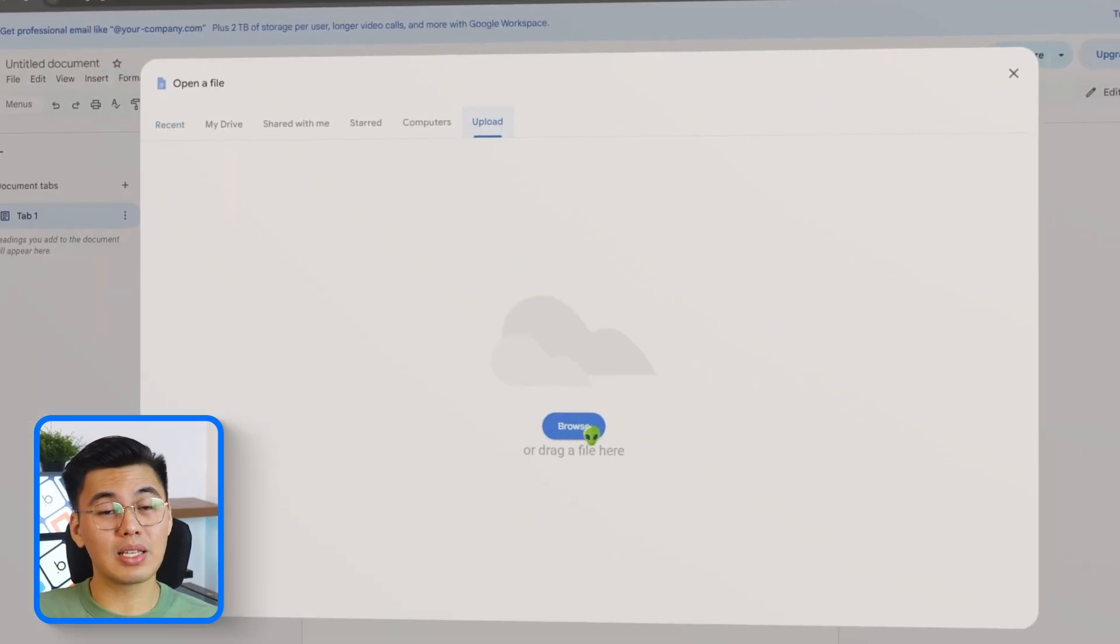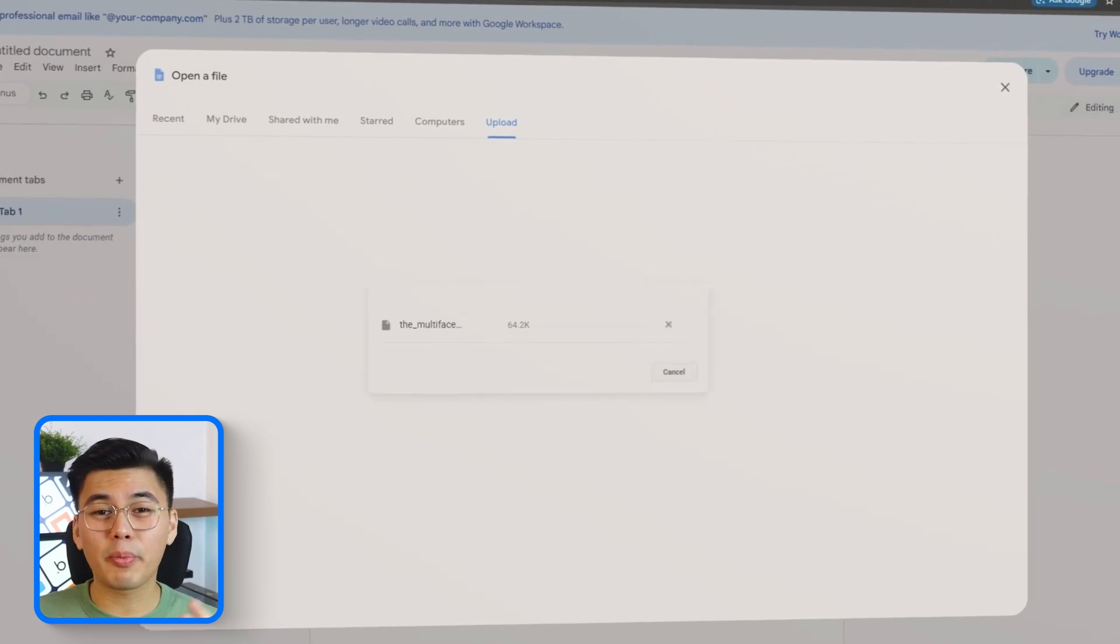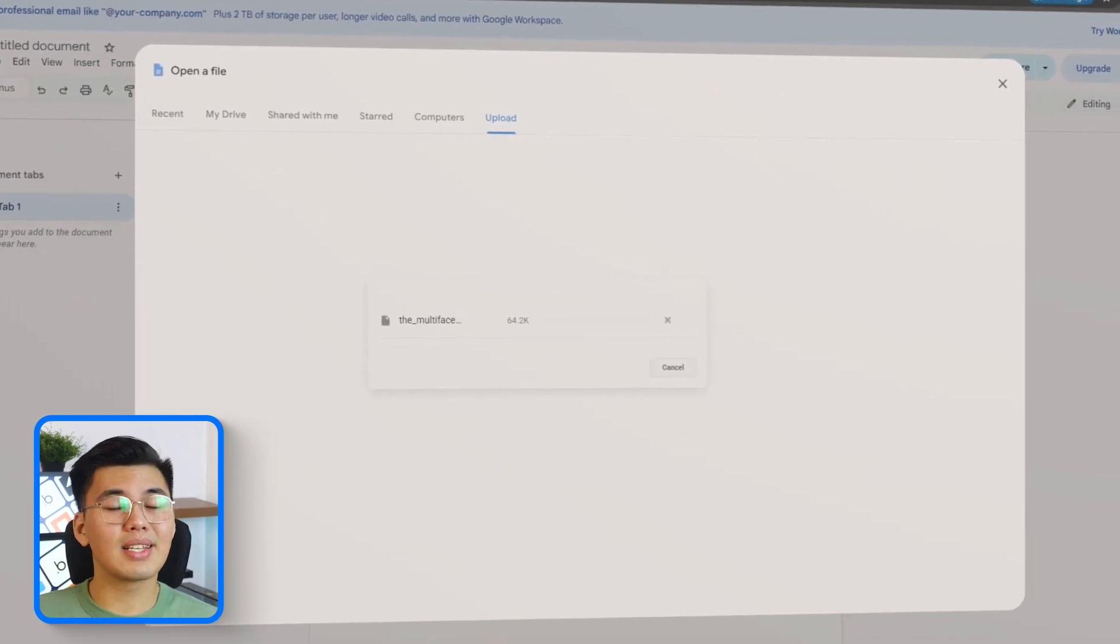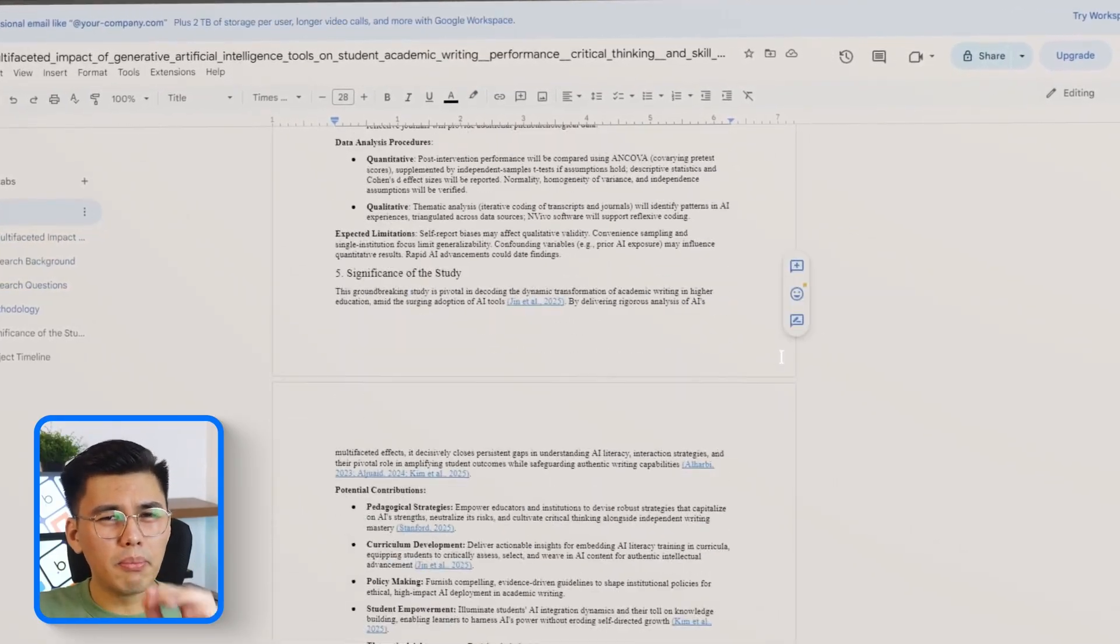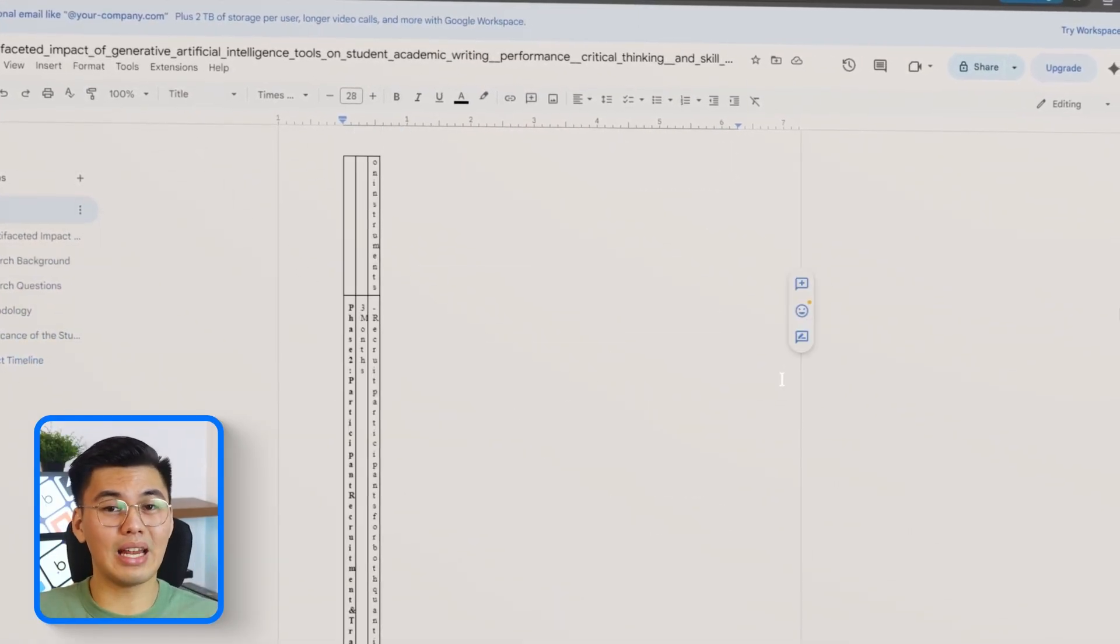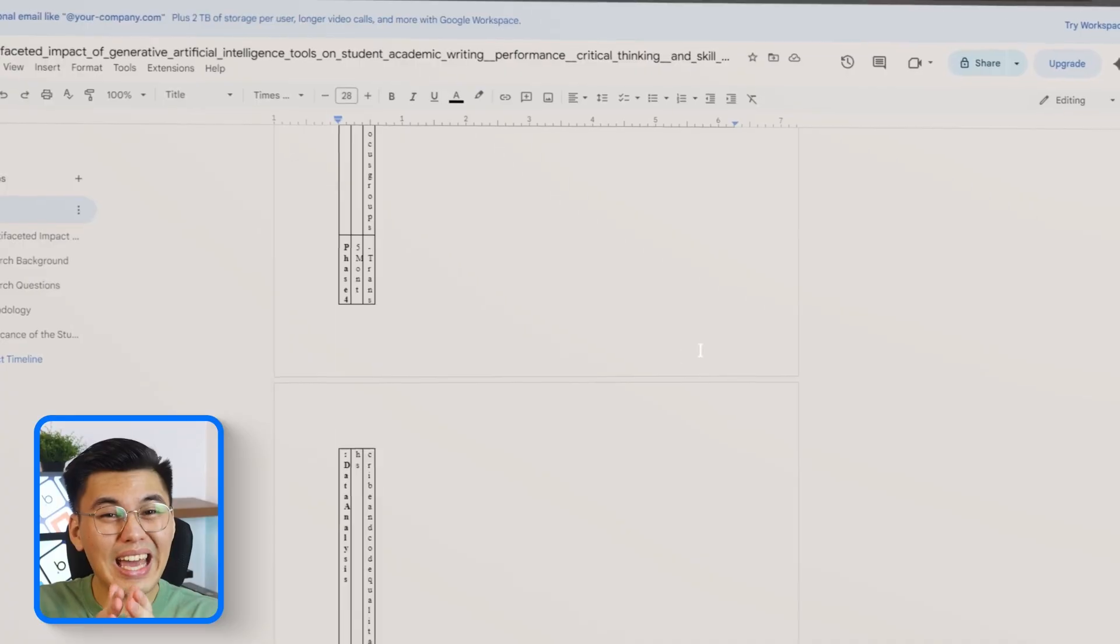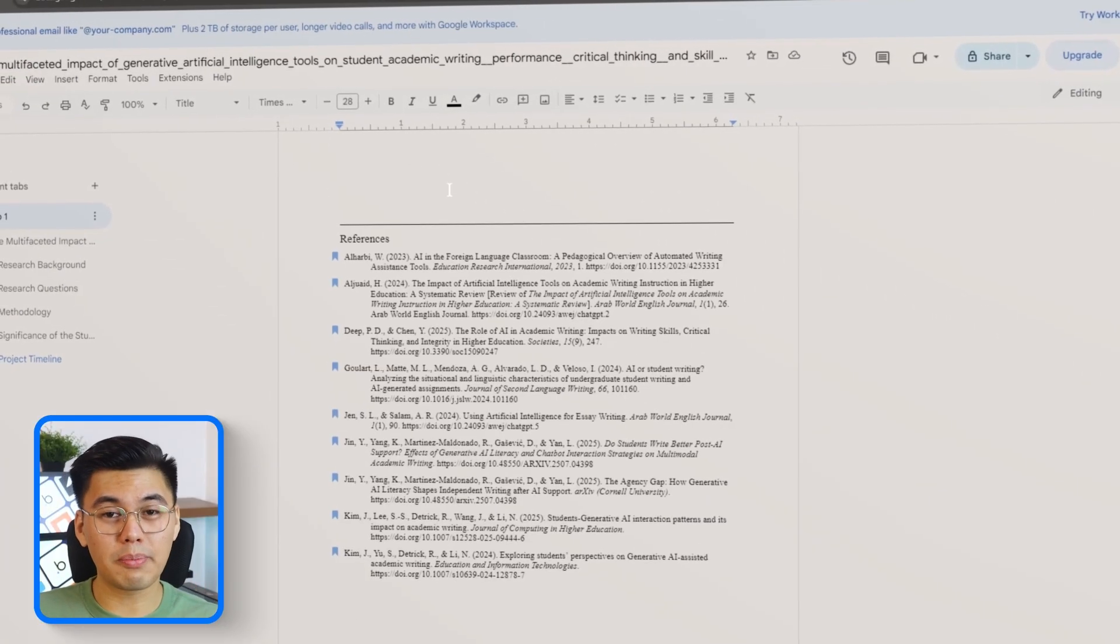Once we're done selecting an option, the download window pops up instantly, confirming that the proposal is ready to save just like any other formal research document. And that's the final step - the moment where the project leaves Jenny.ai and becomes a fully exportable, submission-ready proposal.